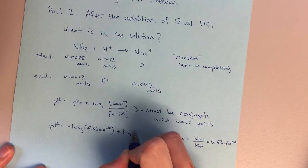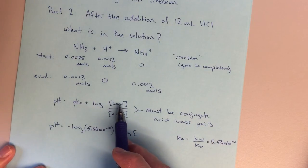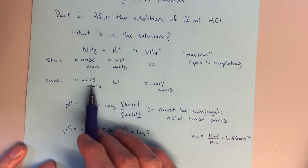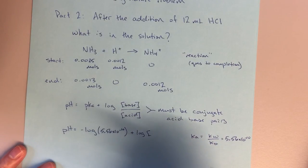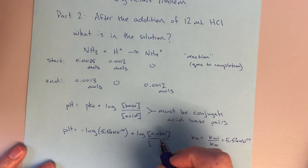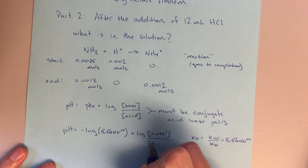5.56 times 10 to the minus 10th plus the log of the concentration of the base. Now, the concentration of the base, what I really want to do is I want to use the concentration, the molarity, so the number of moles divided by the number of liters. So my molarity for NH3 is 0.0351, and my molarity for NH4+ is 0.0324.